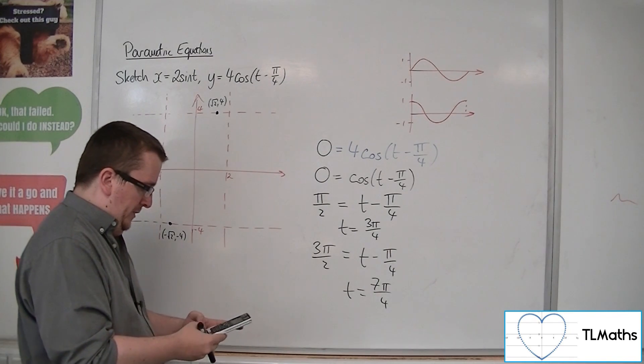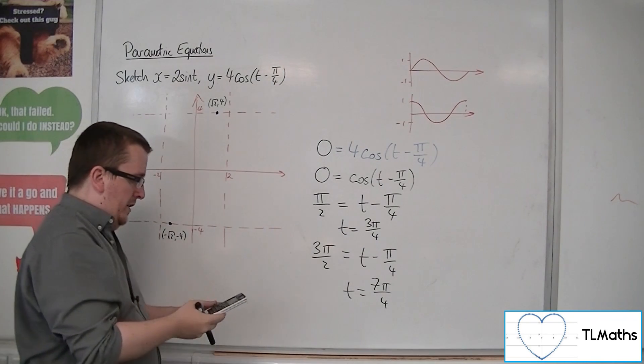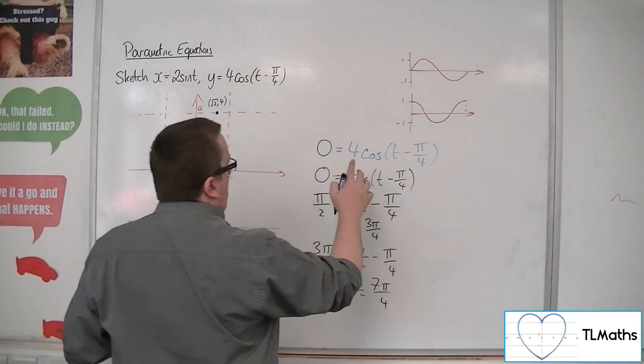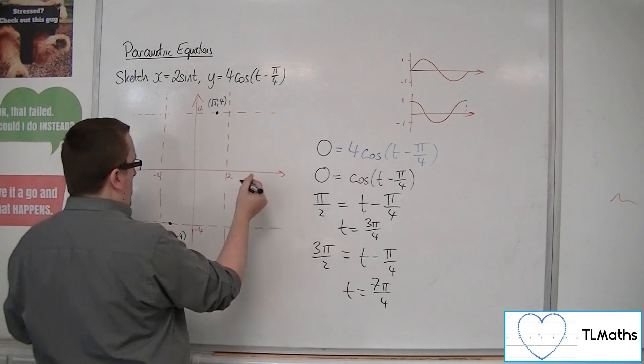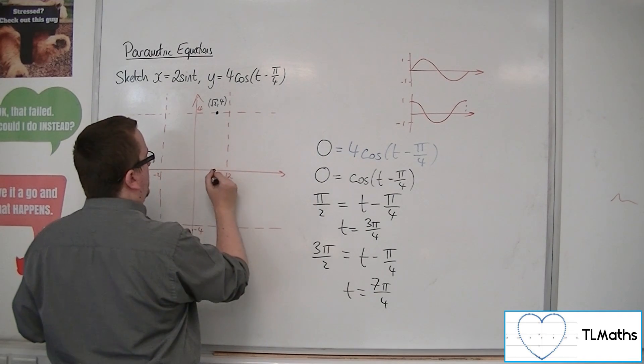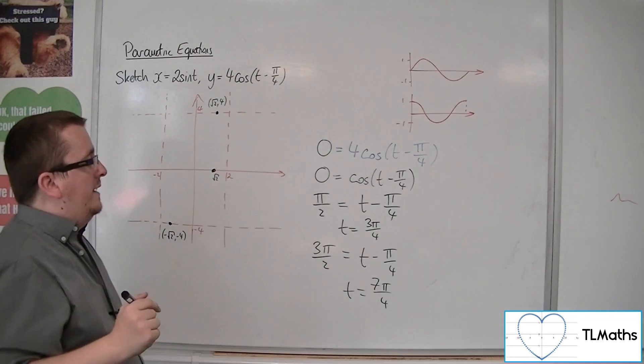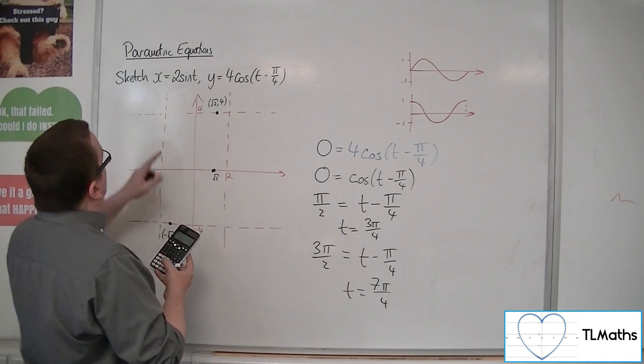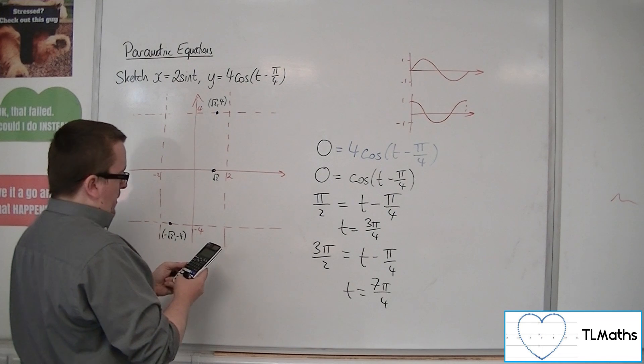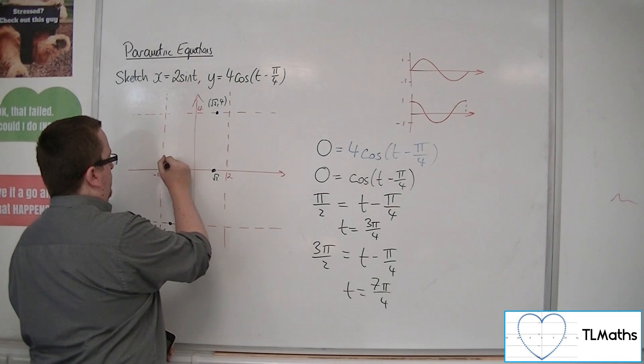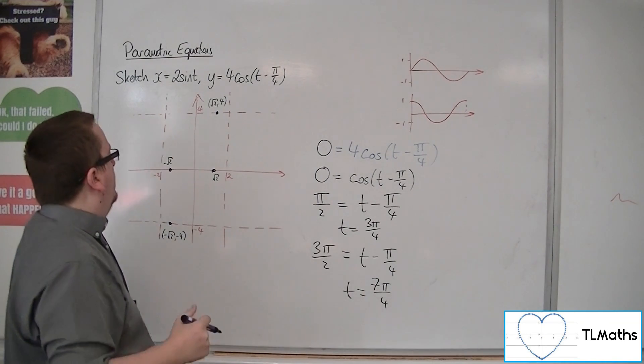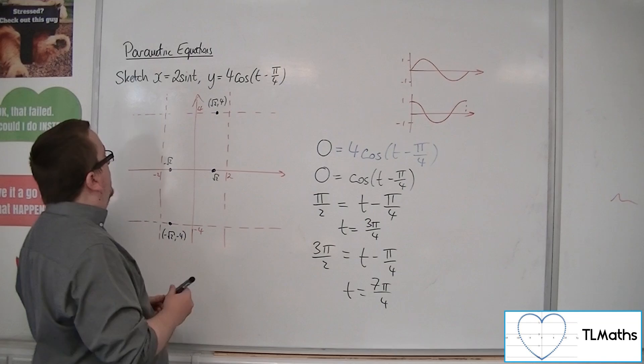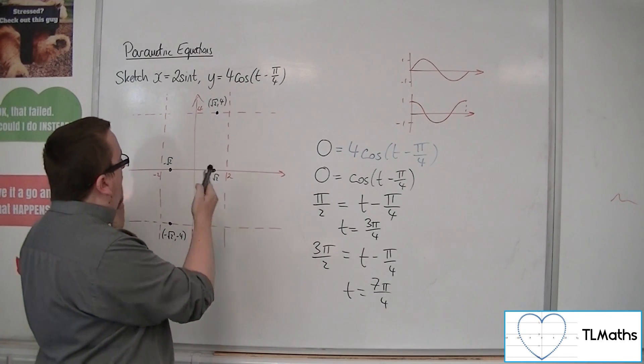So if we substitute 3 pi over 4 in first into the x equals 2 sine t, we get root 2. So at 0, we've got root 2, 0. So something like that is where it's crossing the x-axis there. And at 7 pi over 4, if we do the same, 7 pi over 4, and then substitute it into this, 2 sine 7 pi over 4, we get minus root 2. So we now know where it crosses the x-axis.